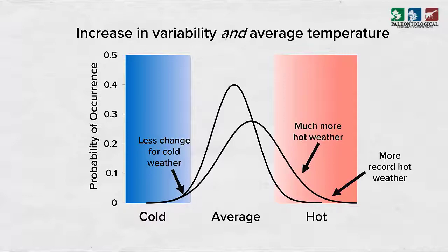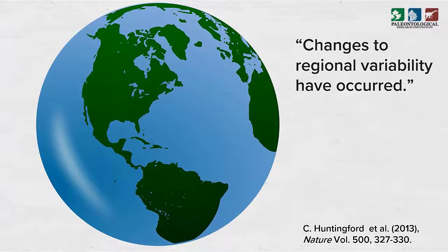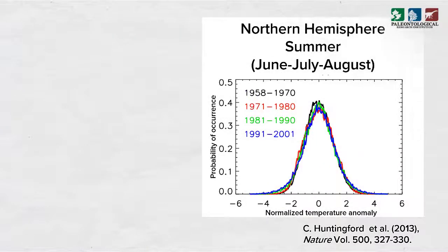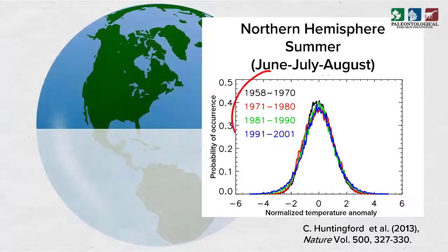But what do scientists find when they look at actual observed climate data? A research study published in 2013 found increased temperature variability in some regions of the world during some seasons, such as summer in North America. This graph shows temperature anomaly distributions during summers in the entire northern hemisphere.